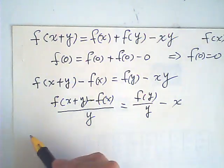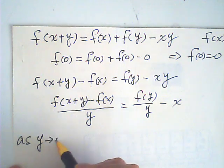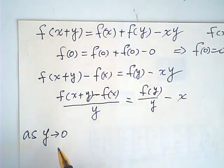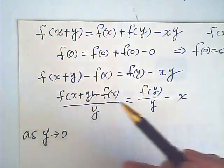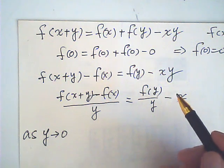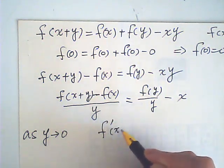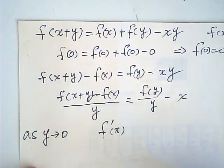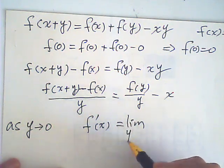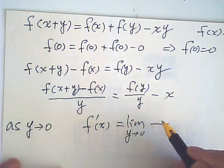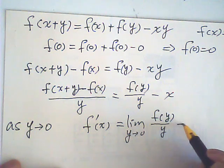Then, as y approaches to zero, if y approaches to zero, then this becomes the derivative of f with respect to x. So, this is f prime of x. And this one is equal to the limit, y approaches to zero, f of y over y minus x.